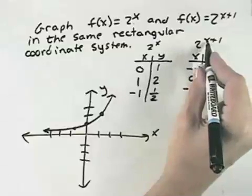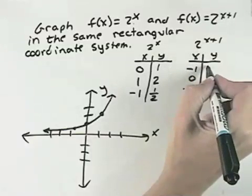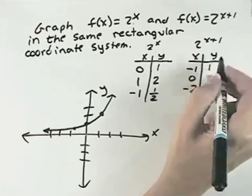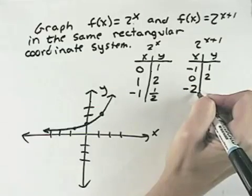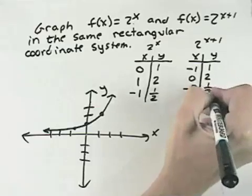In this equation, when x is negative 1, negative 1 plus 1 is 0, so 2 to the 0 is 1. When x is 0, we get 2 to the 1st power, which is 2. When x is negative 2, we get 2 to the negative 1st power, which is 1 half.